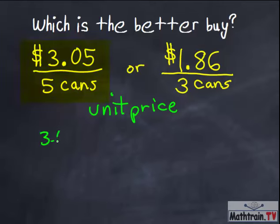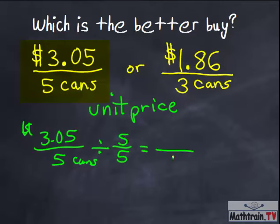So $3.05 over five. If I divide the top and bottom by five, which is the denominator, I get one in the denominator here. And then I get $3.05 divided by five, which is 61. So they're charging $0.61 per every one can.